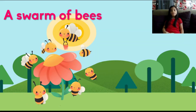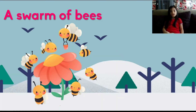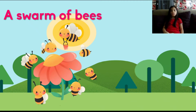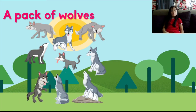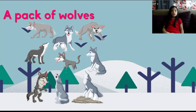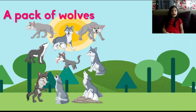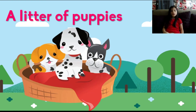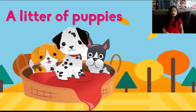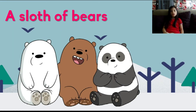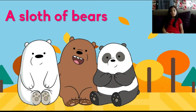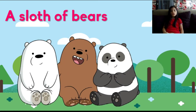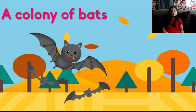A group of bees is called a swarm. A group of wolves is called a pack. A group of puppies is called a litter. A group of bears is called a sloth.